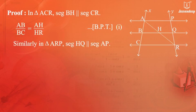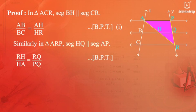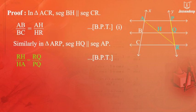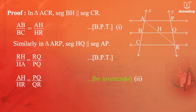Similarly, in triangle ARP, segment HQ is parallel to segment AP. Therefore, according to the Basic Proportionality Theorem, we get AH upon HR is equal to RQ upon PQ. By invertendo, we get AH upon HR is equal to PQ upon QR. (Equation 2)